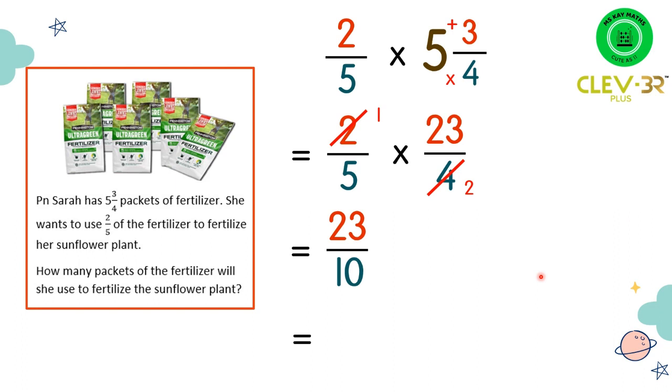So this is an improper fraction. So what we need to do is to convert this improper fraction into a mixed number. So from 23 over 10, we will have 2, 3 over 10.